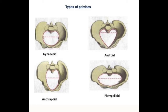The sacrum is wide and relatively short. It slopes backwards with a deep curve from the sacral promontory to the coccyx. The side walls of the pelvic brim are straight and parallel to each other. The ischial spines are not prominent, and the pubic arch is wide and round.